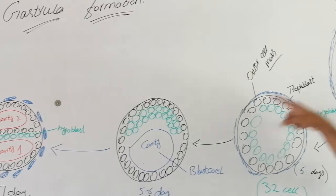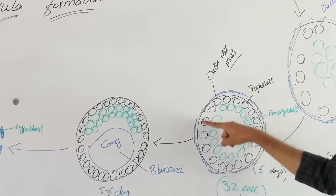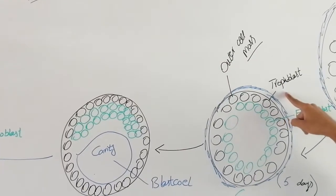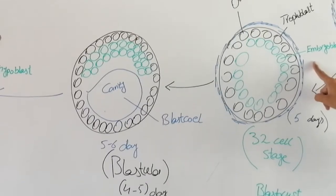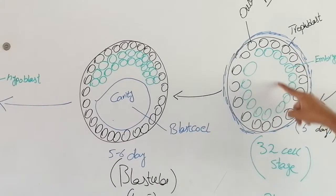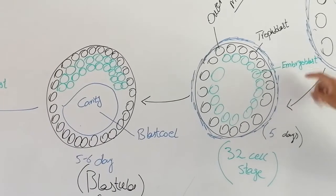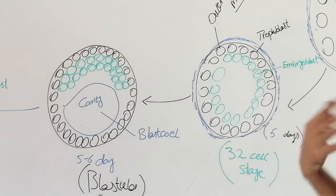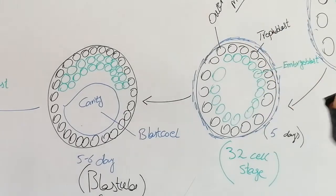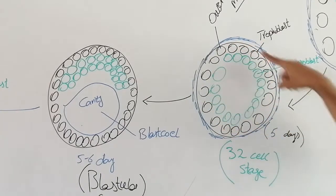We have cell differentiation at the blastocyst stage. The cells on the periphery, represented with the black marker, are called the outer cell mass, also known as trophoblasts. The green circles in the center represent the embryoblast. The embryoblast is responsible for making the different membranes and different structures of the baby.